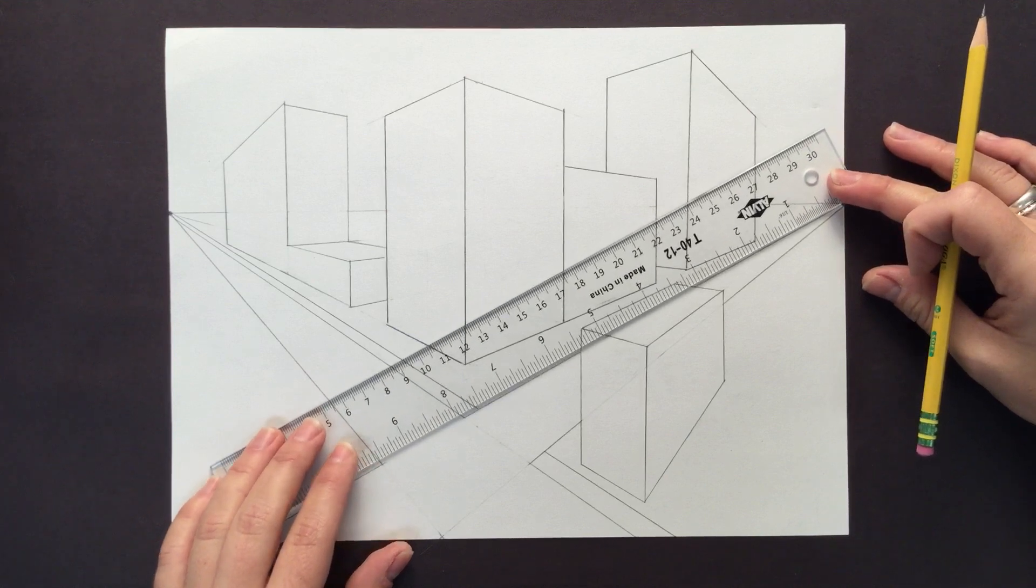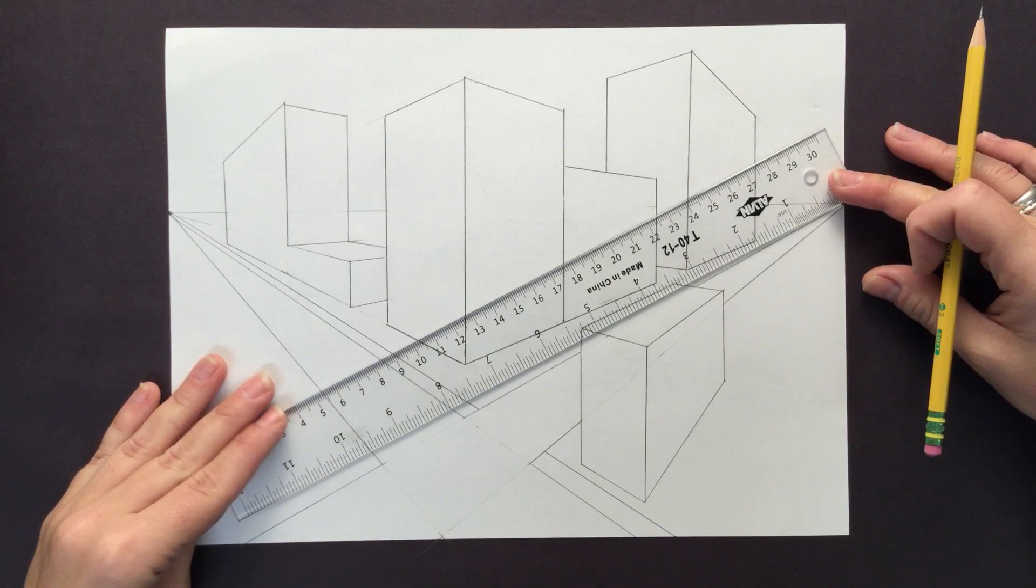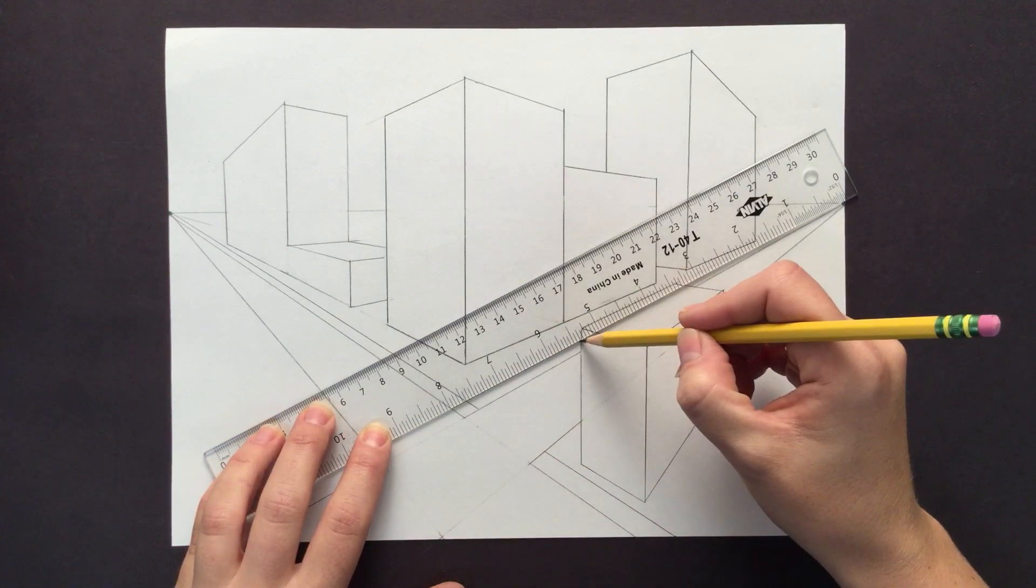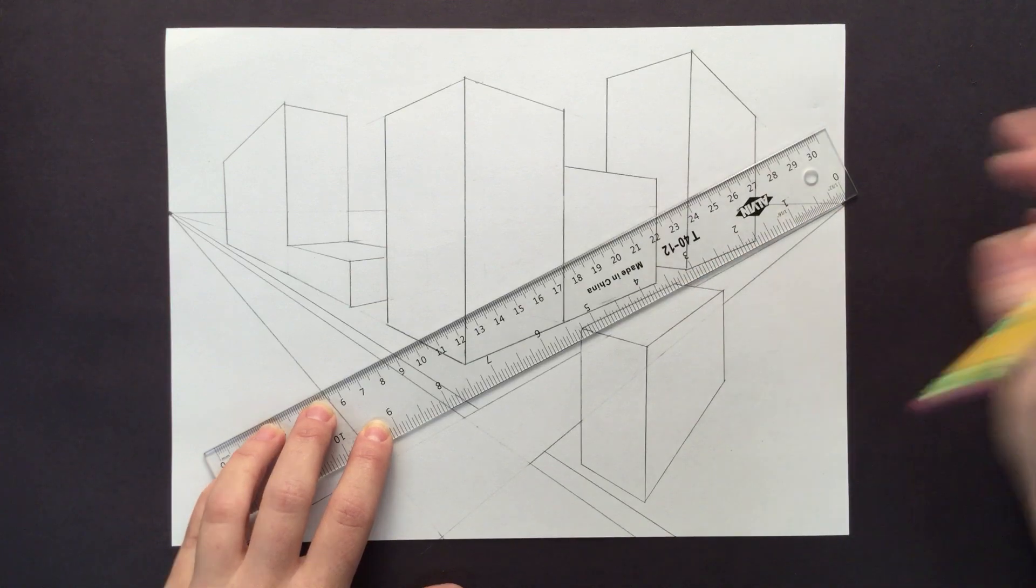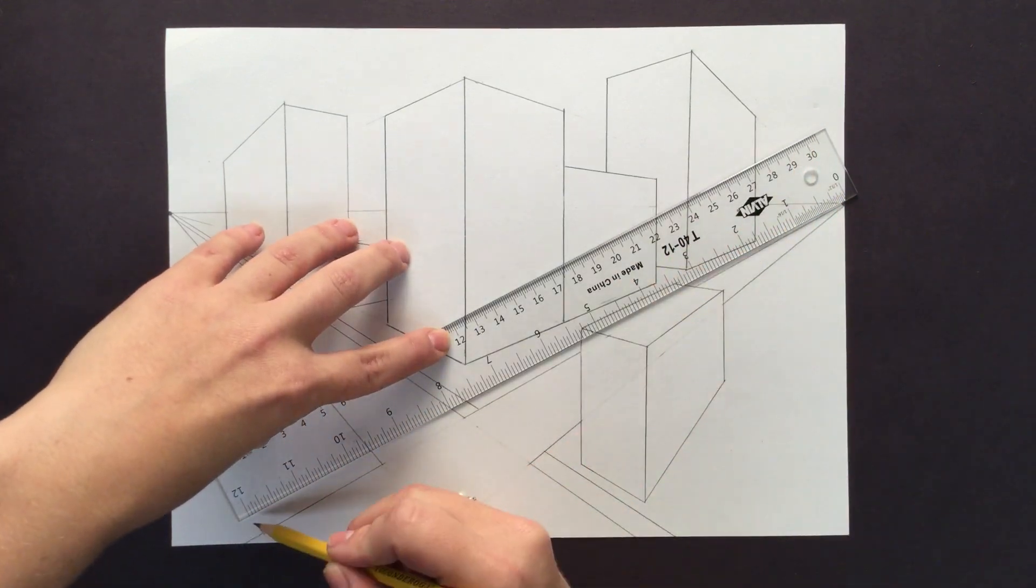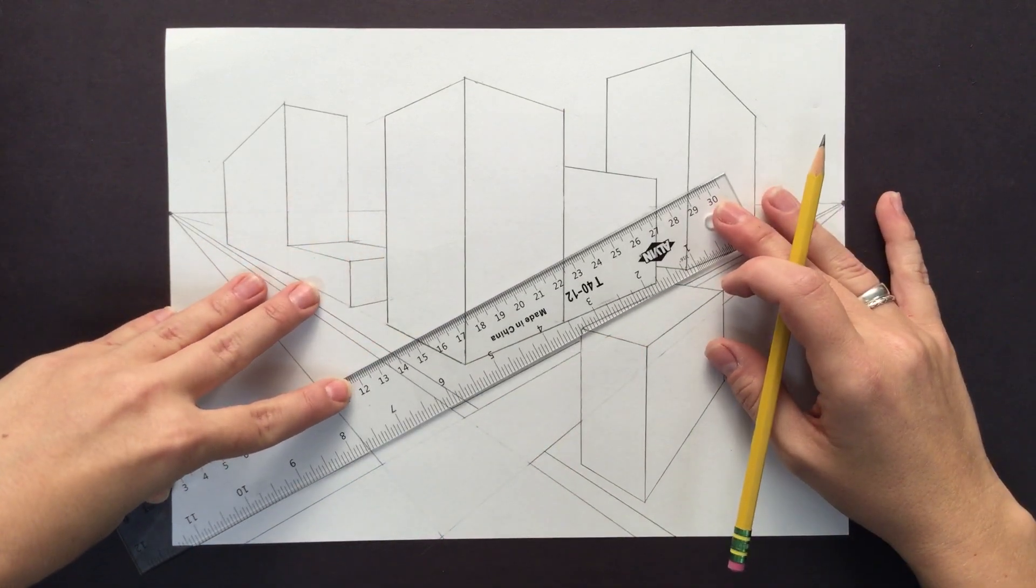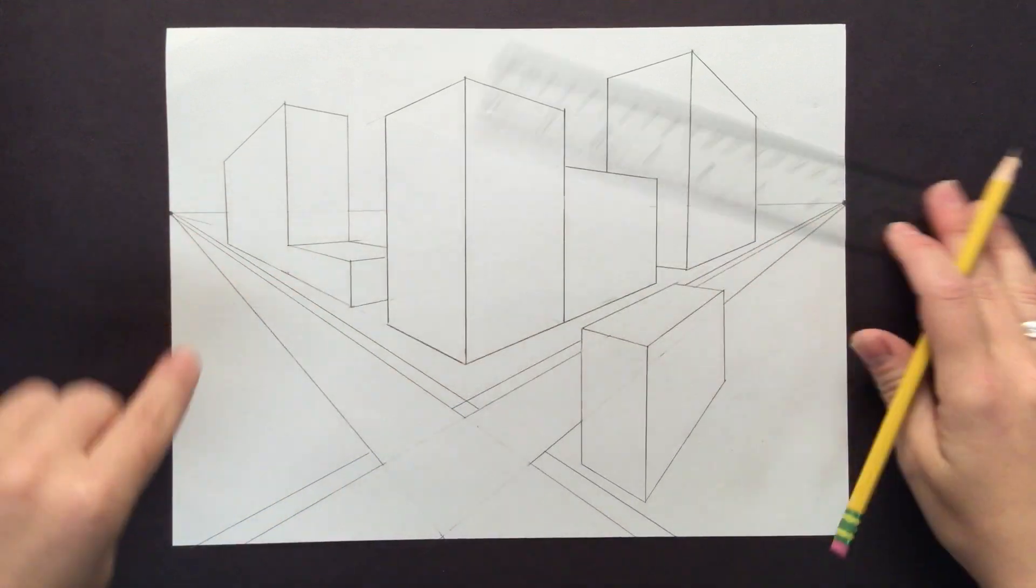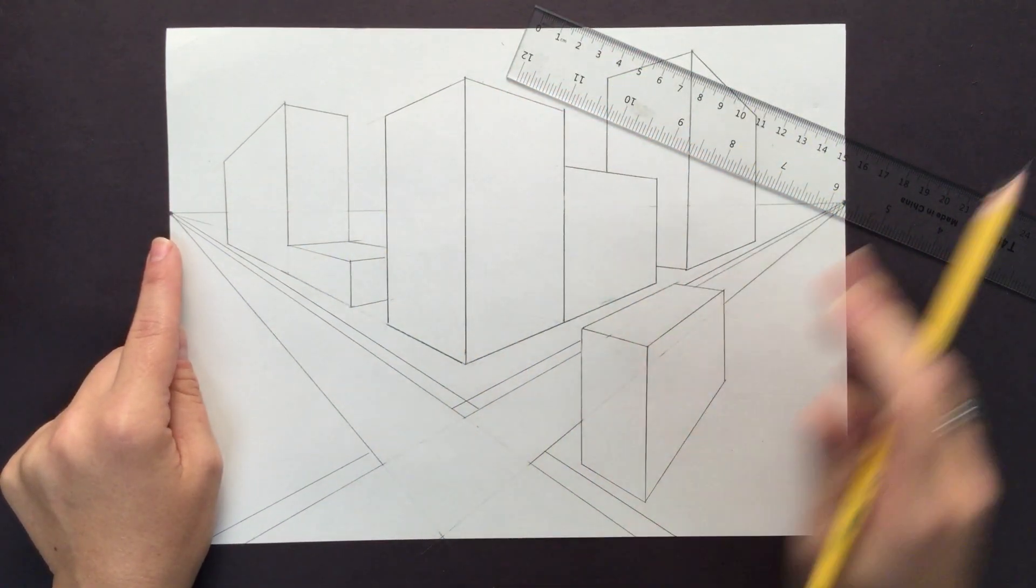So I'm going to line up to my vanishing point. This one's not going to quite get to the end of the paper. That's okay. And I'm going to draw my sidewalk and I don't want it to cross over my building. It's going to go to the vanishing point in the back. And I'll just extend my ruler out. Just like that. So now we've got an intersecting sidewalk that's happening.